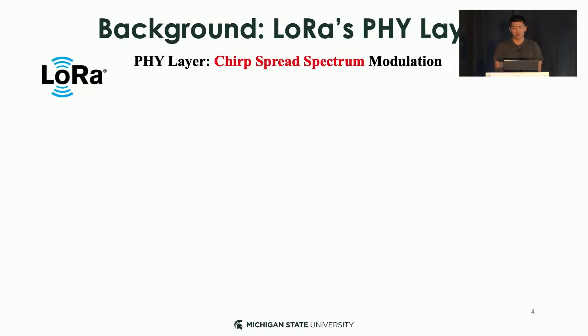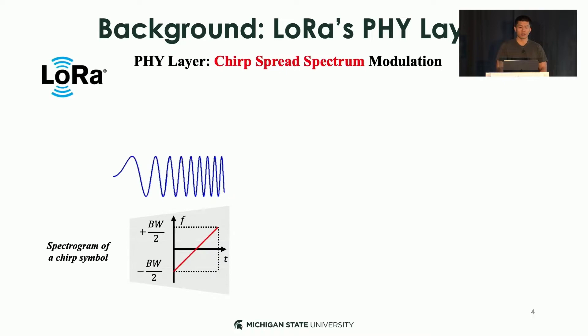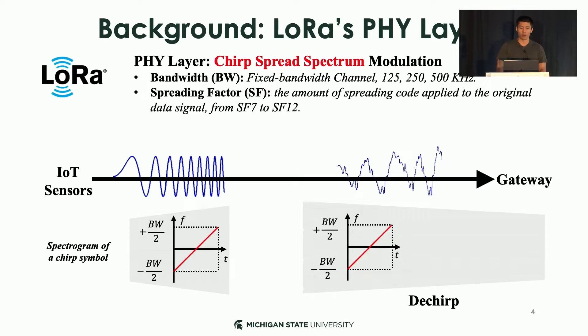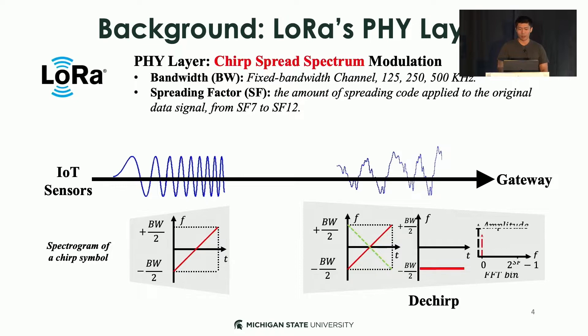Before introducing our work, let me introduce LoRa's background, especially its physical layer design — chirp spread spectrum. The chirp signal is a signal whose frequency increases linearly over time, which can be observed in the spectrogram of the chirp symbol. It has two configurations: the bandwidth and the spreading factor. From the transmitter to the gateway, we adopt the dchirp for decoding. Upon receiving the chirp signals, we multiply them with the base downchirp, concentrating the energy into a single frequency bin, and decode the data by detecting the energy peak on the spectrum via FFT.